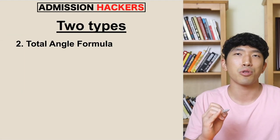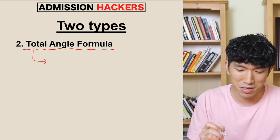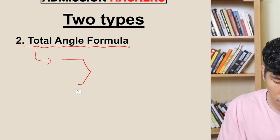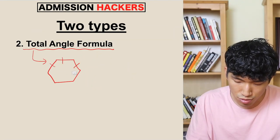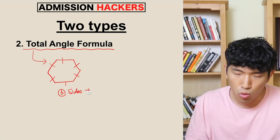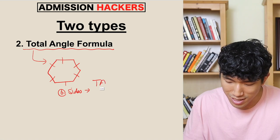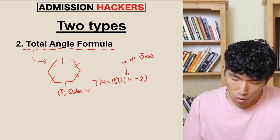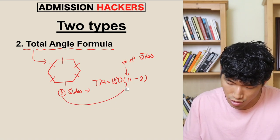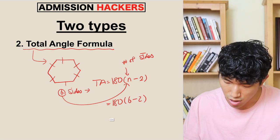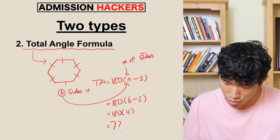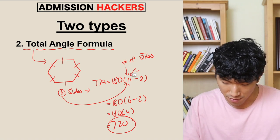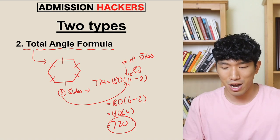The second type you need to know is based on the total angle formula. It tells you what the total angle is based on the number of sides. For example, a hexagon has six sides. The total angle is calculated by 180 times (N minus 2), where N represents the number of sides. For a hexagon, you plug in six: 180 times (6 minus 2) equals 180 times 4, which is 720. So the total angle within the hexagon is 720. For a pentagon, you plug in five because it has five sides — and that's how you use the total angle formula.